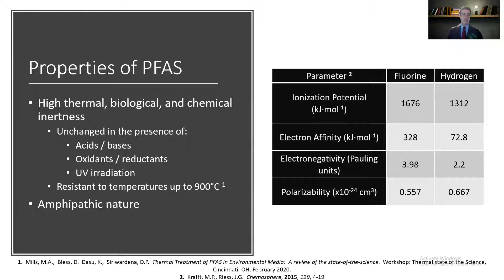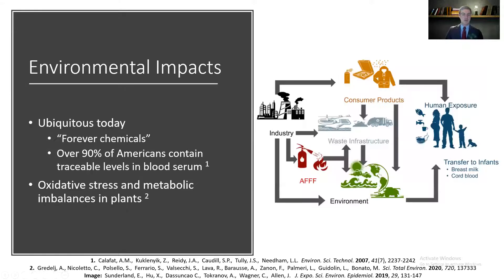They're also resistant to temperatures up to 900 degrees Celsius, which for the discussion of cannabis is very important because that's the average burning temperature of a cigarette. And because they've been used so extensively since their inception in 1946, they're ubiquitous in the environment today. They're considered forever chemicals because they don't break down. Most of it stems from industry, where it makes its way into consumer products and the environment, and eventually to us.